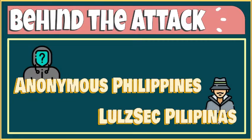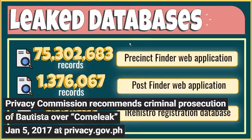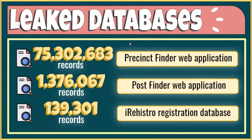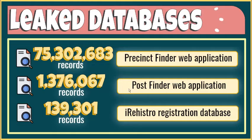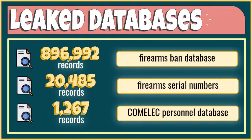The National Privacy Commission, which is the Philippines' privacy watchdog and independent body mandated to administer and implement RA-10173, or the Data Privacy Act of 2012, found that the personal data in the breach was contained in several databases: the Voter Database in the Precinct Finder Web Application containing 75,302,683 records; the Voter Database in the Post Finder Web Application with 1,376,067 records; the iRegistro registration database with 139,301 records; the Firearms Ban Database containing 896,992 personal data records and 20,485 records of firearms serial numbers; and the COMELEC Personnel Database containing records of 1,267 COMELEC personnel.